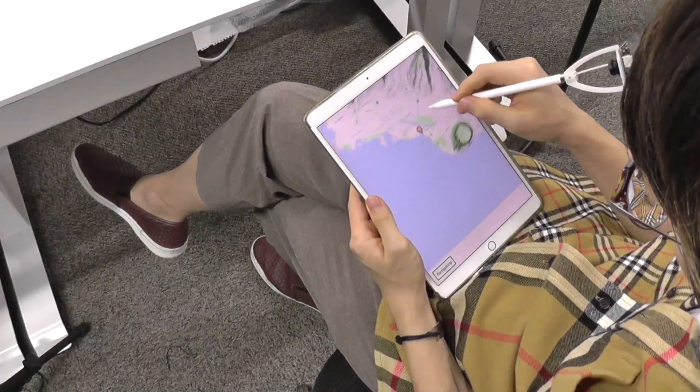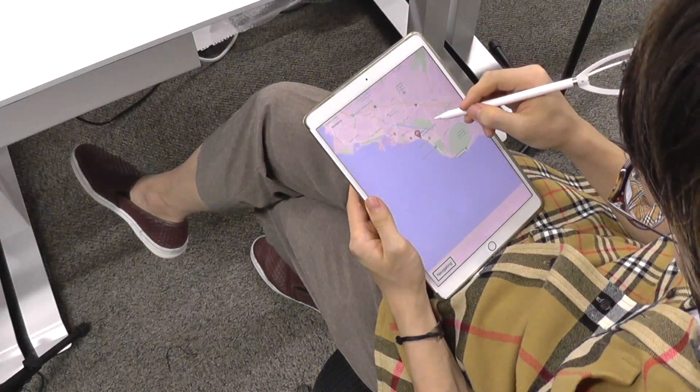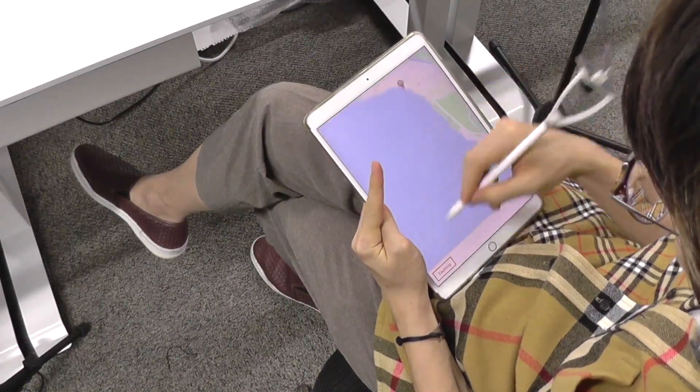When gripping the tablet, mid-air finger movements can be used to change modes, for example to switch to zooming in a map application.